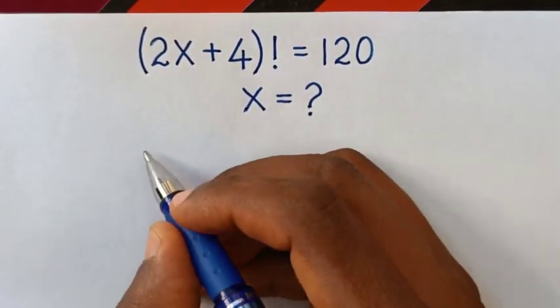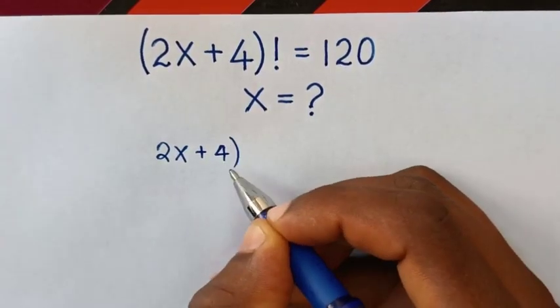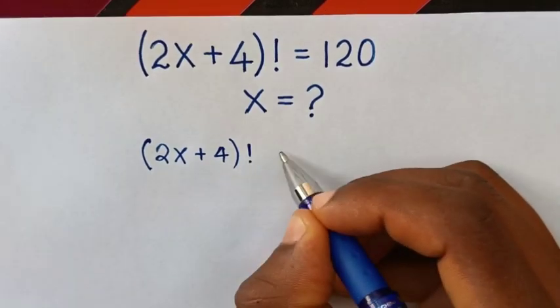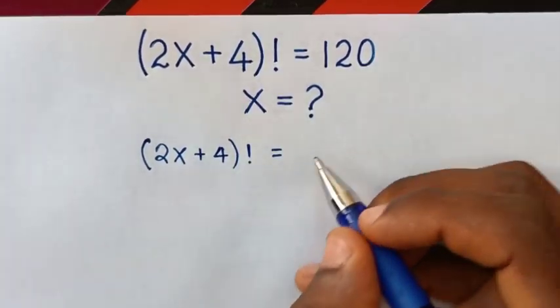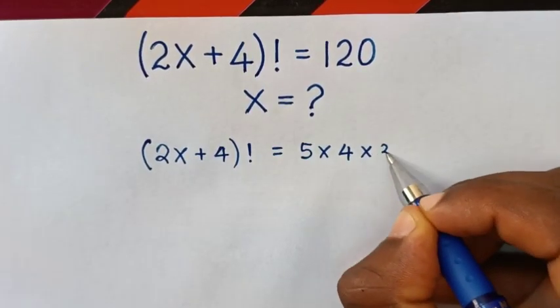So first from this equation, (2x + 4)! = 120 is the same as 5 times 4 times 3 times 2 times 1.